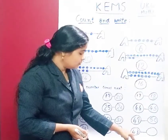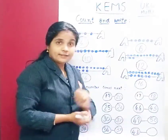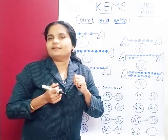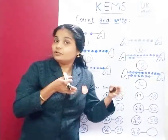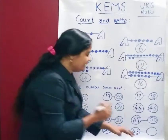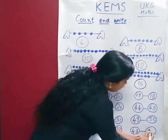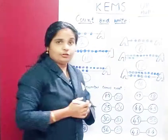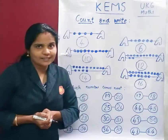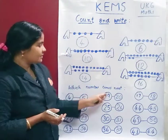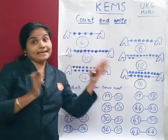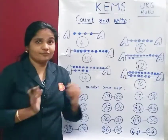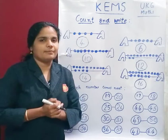Last number: 43. After 43 is 44. Very good, children. 43, 44. This is next number, or after number. After number or next number.